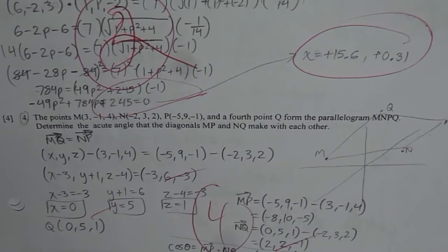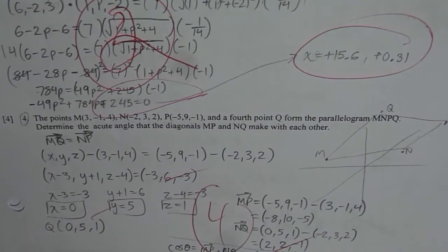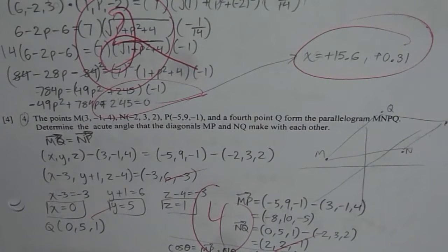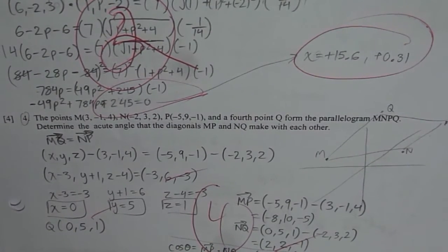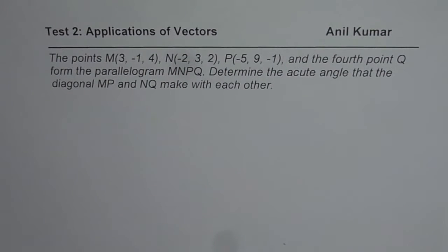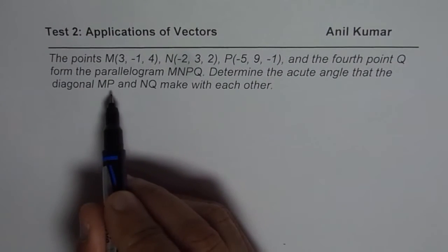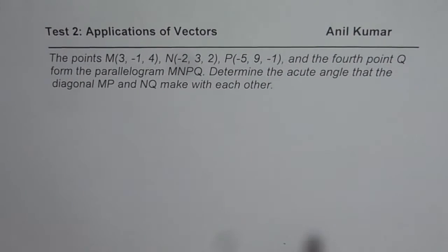I am Anil Kumar and here is an application question on vectors dealing with parallelogram. So let us look into this question in greater details. The question before us is that the point M which is (3, -1, 4), N which is (-2, 3, 2), P is (-5, 9, -1) and the fourth point Q form a parallelogram MNPQ. So determine the acute angle that the diagonals MP and NQ make with each other.